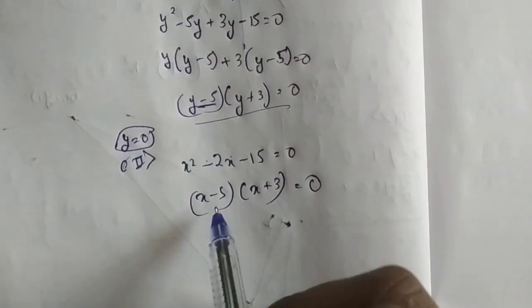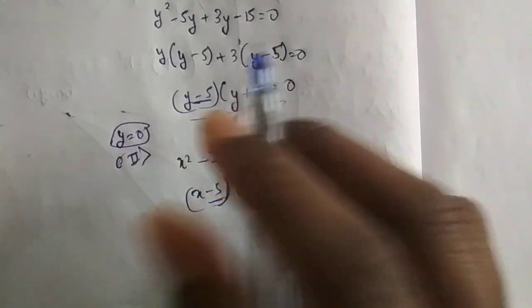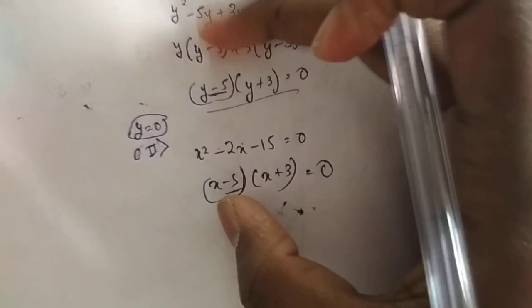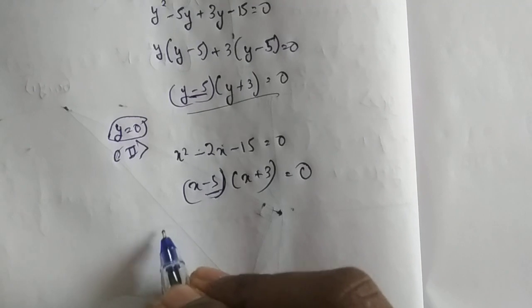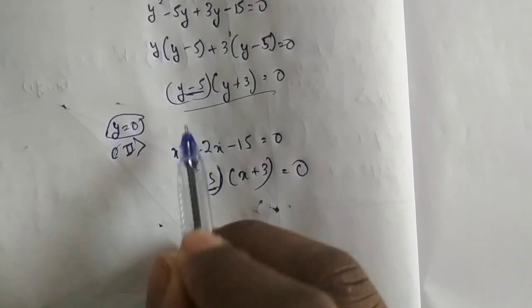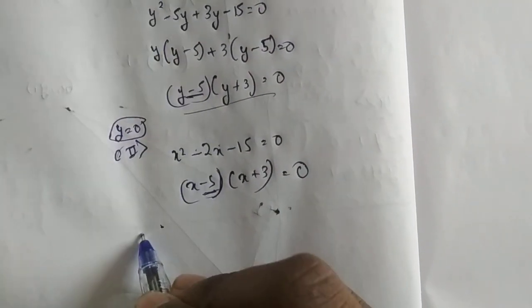Now the trick is that if they have the same coefficient, you merge them and form one equation. Like this is minus 5, this is minus 5, so same coefficient.